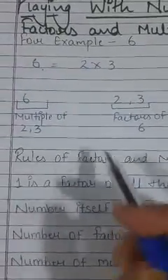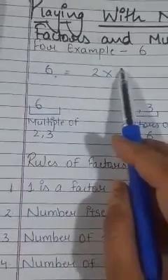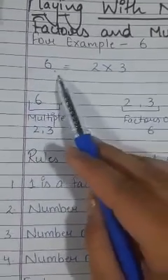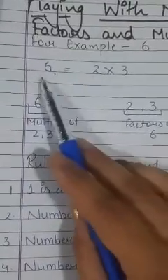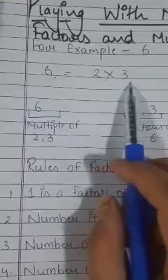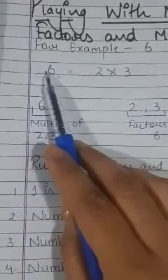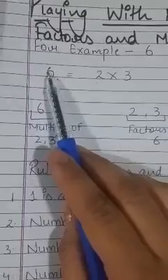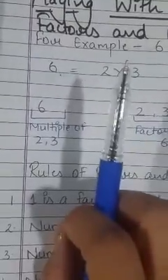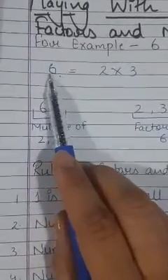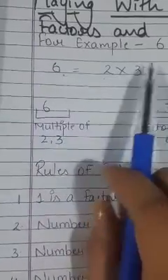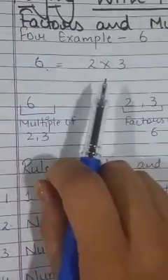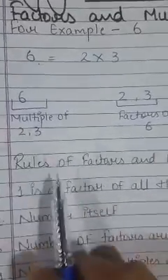So what does this mean? This means that 6 comes in the table of 2 and 3. So 6 is a multiple of numbers 2 and 3, and 2 and 3 are the Factors of the number 6. If any number is given to you and it comes in the table of whichever number, that number will be the Factor. So this is Factors and Multiples. Now let's understand some rules of Factors and Multiples.